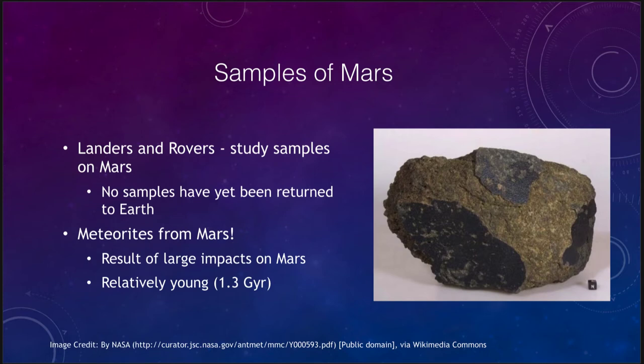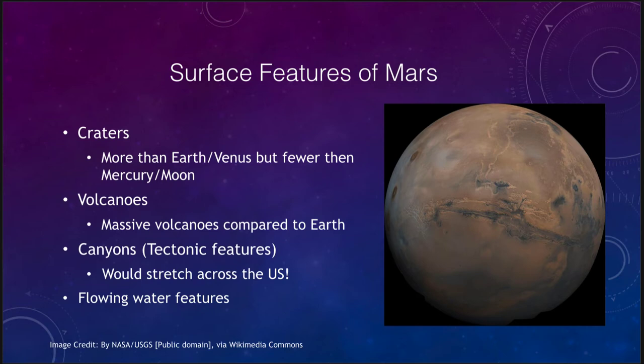Let's look in more detail at Mars and some of its surface features. Here is a nice image of Mars where we can see some major features. We do see some craters scattered around. Mars is kind of intermediate — it has far more craters than Earth and Venus, but far fewer than Mercury and the Moon, putting its age in between those two. Mercury and the Moon would be the two oldest objects, Venus and Earth the two youngest, and Mars would be in between.